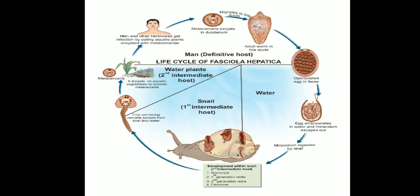Fasciola hepatica passes its life cycle in one definitive host and two intermediate hosts — three hosts in total. The definitive host can be sheep, goat, cattle, or man, whereas the intermediate hosts are snails of the genus Lymnaea and Succinea.